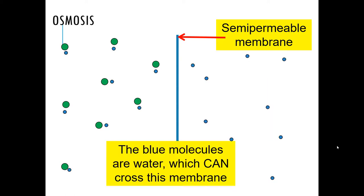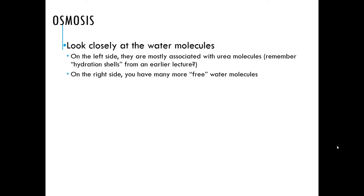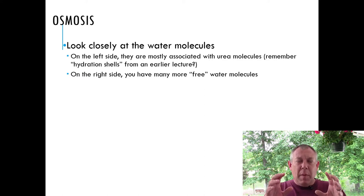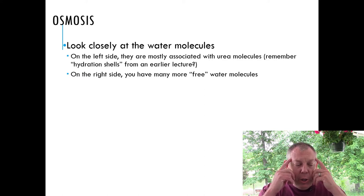But in real life you're not going to have just that one molecule. If it's a cell, you're going to have lots of water molecules. So now in this example, these small blue circles represent those water molecules. But remember that water molecules can cross the cell membrane — they can move across this membrane. We want to think closely about the water molecules in this example.